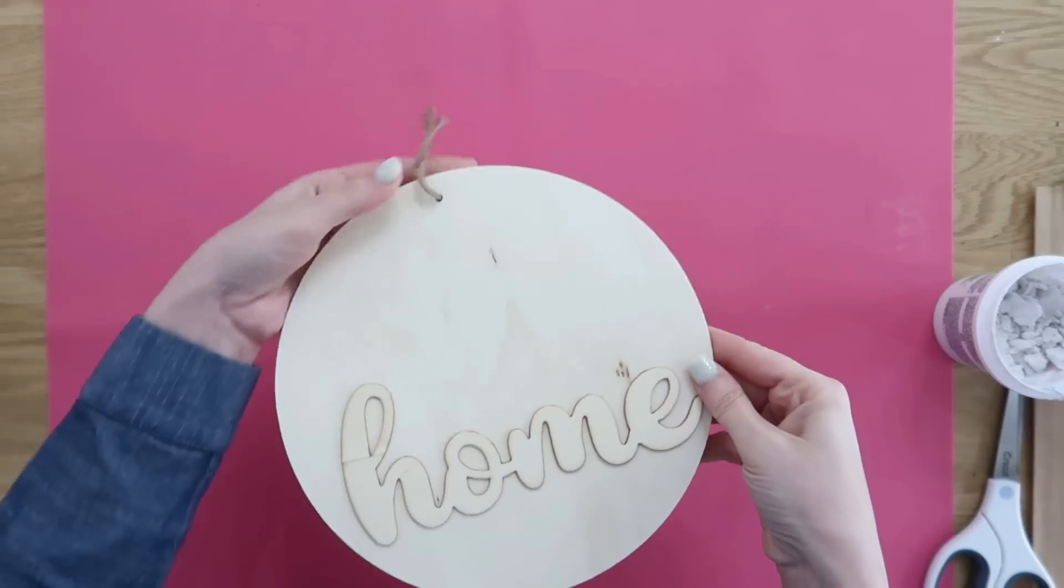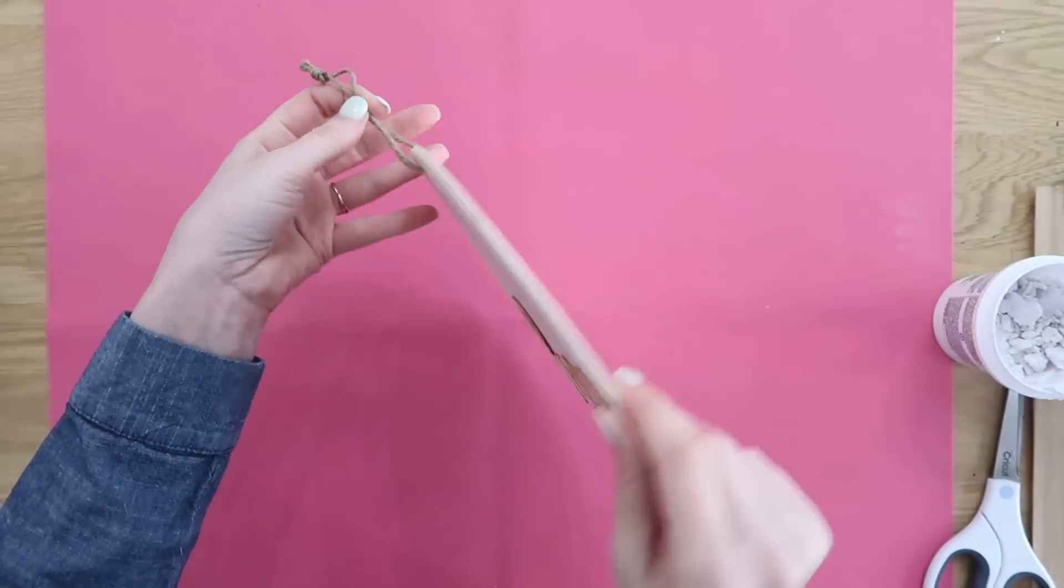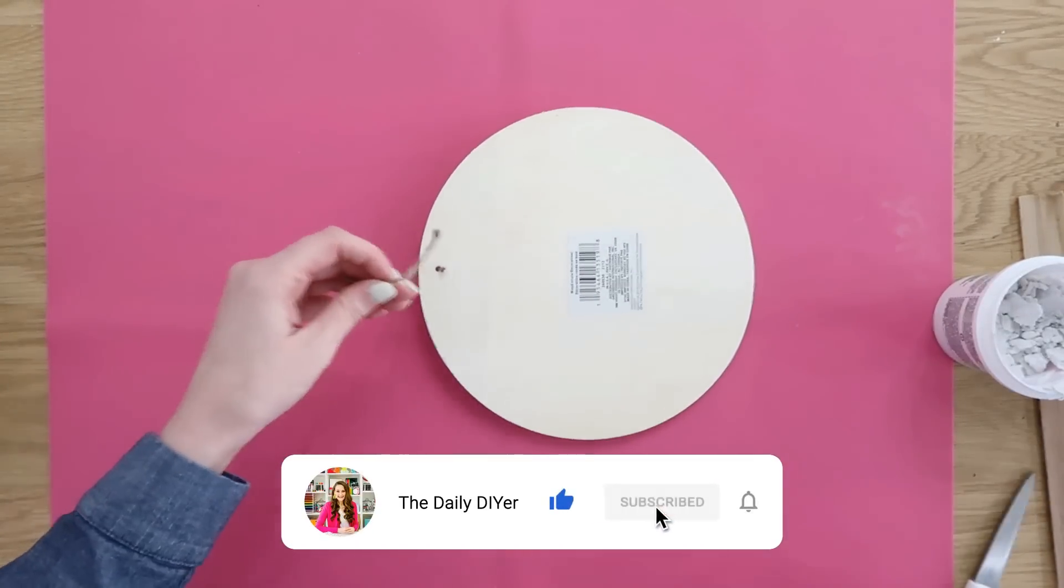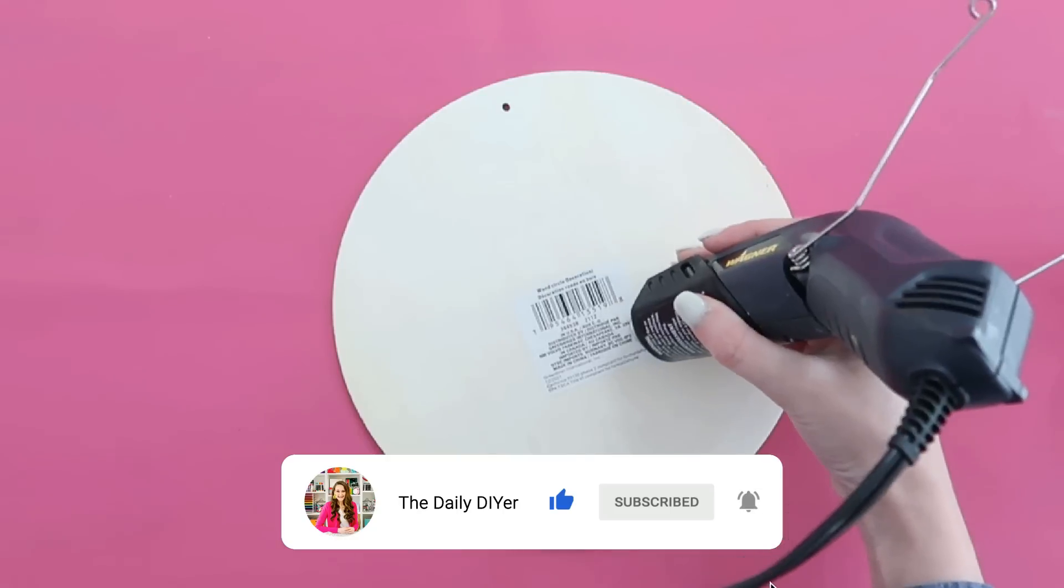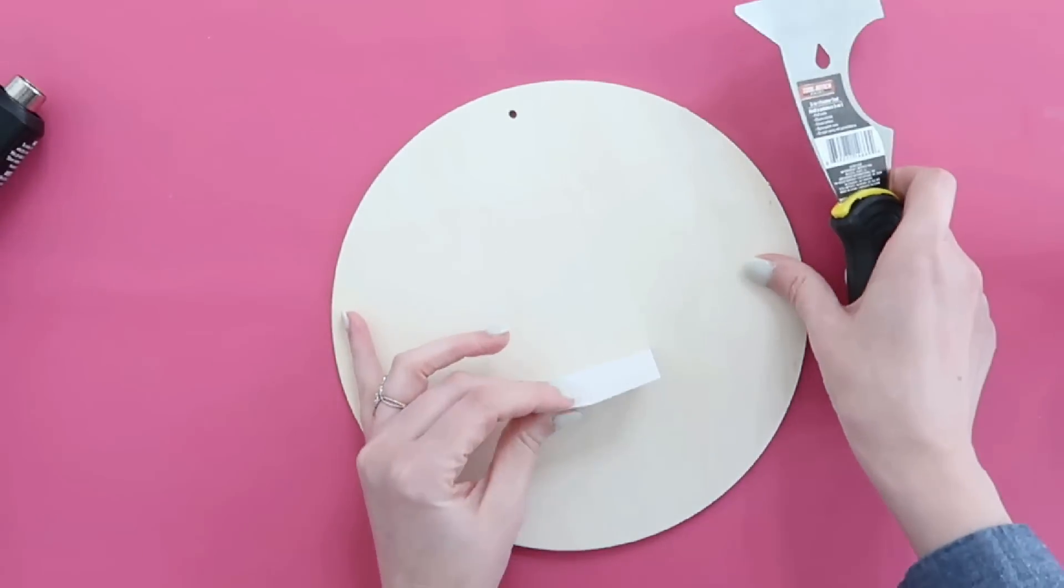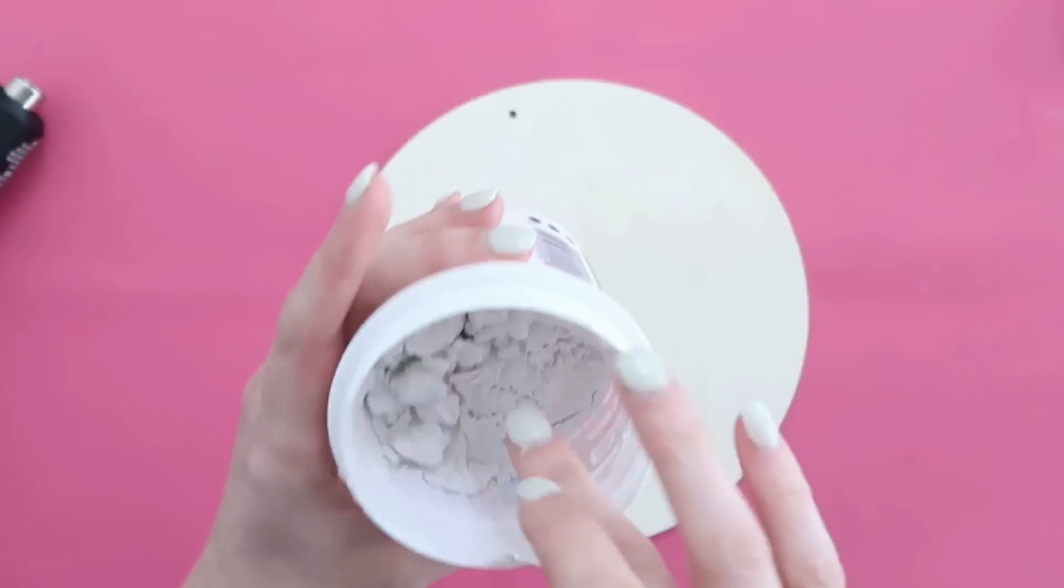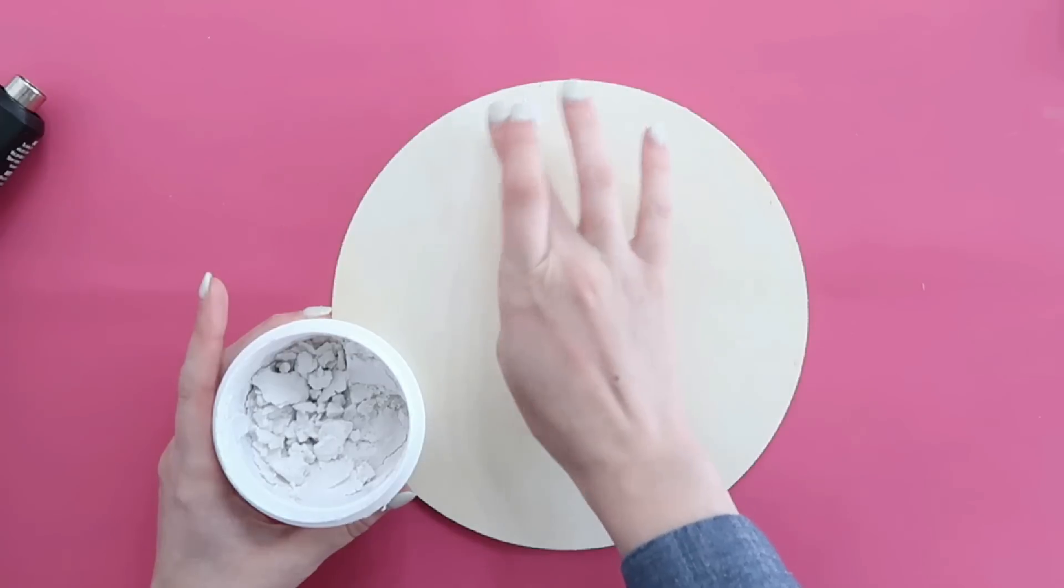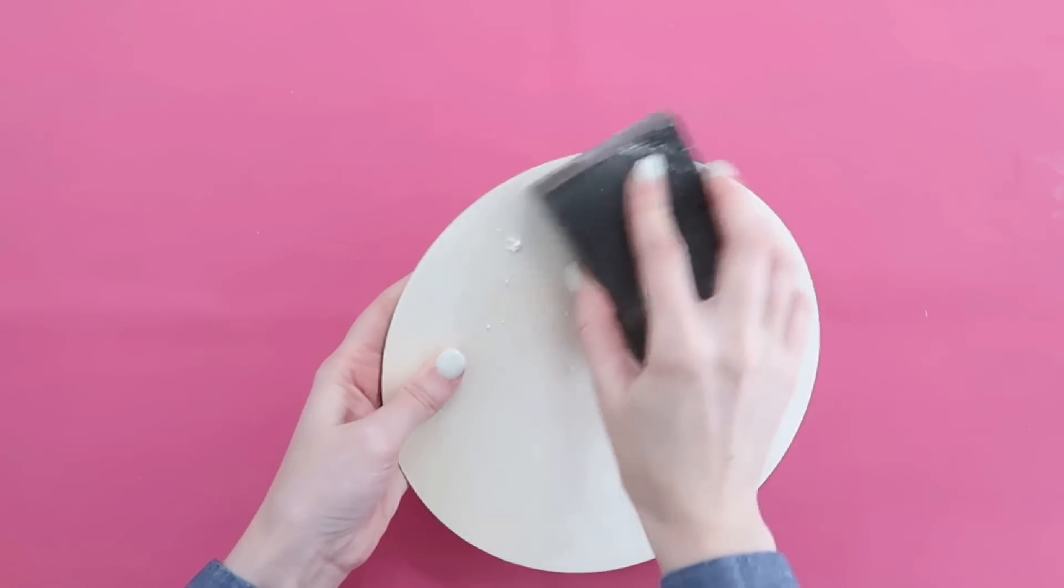First, we're going to work with this wood sign. I immediately thought let's make a high end looking decorative cutting board with this. To get started, we're going to cut off the jute from the top and also remove the sticker because we're going to be using the backside of this. Then you're going to take some Dollar Tree spackle and fill in that hole. Once you've done that, you want to let that sit and dry and then you can come back and sand that smooth.